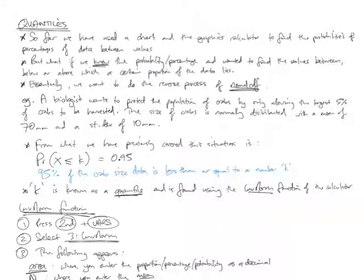But what if we were doing the opposite? What if we knew the probability or percentage of data that we were interested in and wanted to find the values between, below or above which that percentage of data lies? So, going back the other way. What values are there between which, say, 50% of the data lies or 60% of the data lies? Essentially you want to do the reverse process of what you're doing with the normal CDF function of your graphics calculator or doing with that chart on page 280.